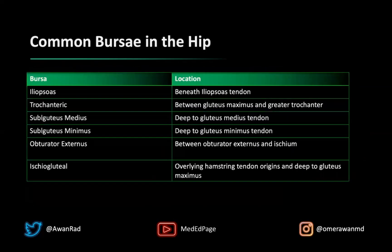There are six common bursae in the hip to highlight. The iliopsoas bursa, which we talked about, is beneath the iliopsoas tendon. The greater trochanteric bursa, which often gets a lot of press, is between the gluteus maximus and the greater trochanter. The subgluteus medius bursa is deep to the gluteus medius tendon where it inserts onto the posterior and lateral facet of the greater trochanter. The subgluteus minimus bursa is deep to the gluteus minimus tendon where it inserts onto the anterior facet of the greater trochanter.